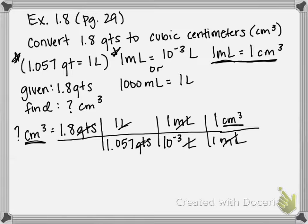Now we can multiply across, so 1.8 times 1, that's just 1.8, and that's centimeters cubed. And then on the bottom it's going to be 1.057 times 10 to the negative third times 1.